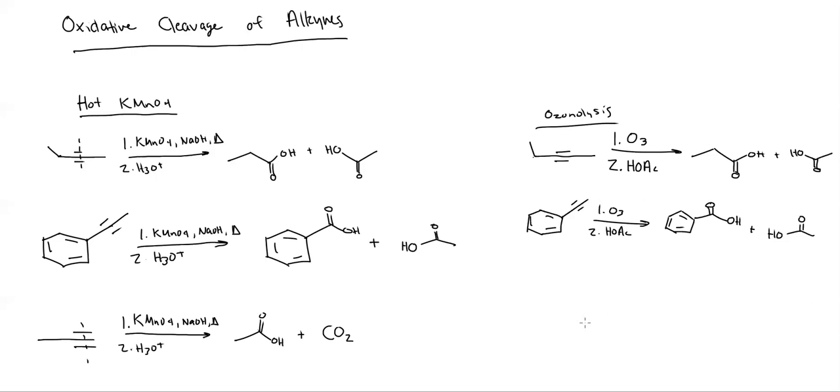And again, if I do this with ozonolysis, you guessed it, I get the same thing. Nothing different whatsoever. So ozonolysis. And as a second step, we're going to throw in some acetic acid and I get the exact same products, CO2 and ethanoic acid. So that's it.